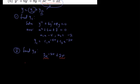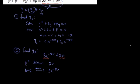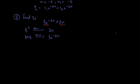To find the annihilators: D² annihilates 2x, and D+2 annihilates 3e^(-2x). If you don't know how I got D² or D+2, there are previous videos that explain how to find the annihilator of a function. So the annihilator of 2x + 3e^(-2x) is the product D²(D+2).